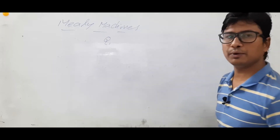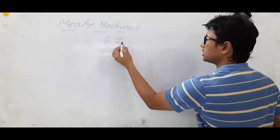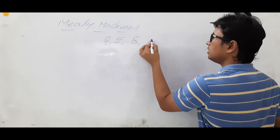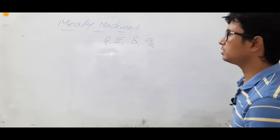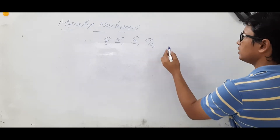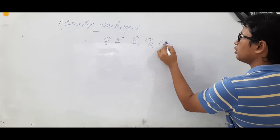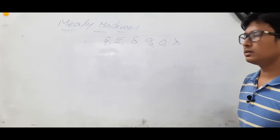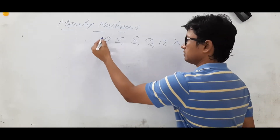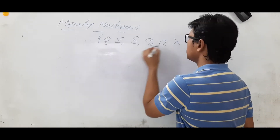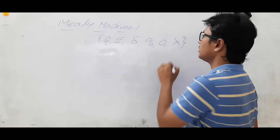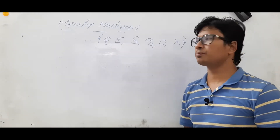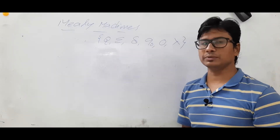A Mealy machine is represented as a tuple: you have Q, you have sigma, you have delta, you have q-naught, you have an output alphabet O, and you have lambda for the output function. This is the way we represent a Mealy machine, the same way we have represented the Moore machine.